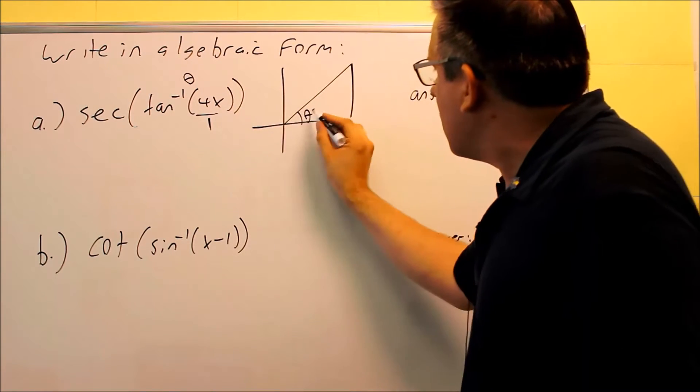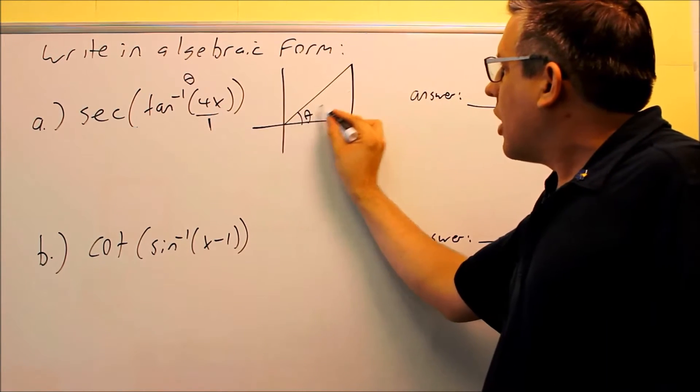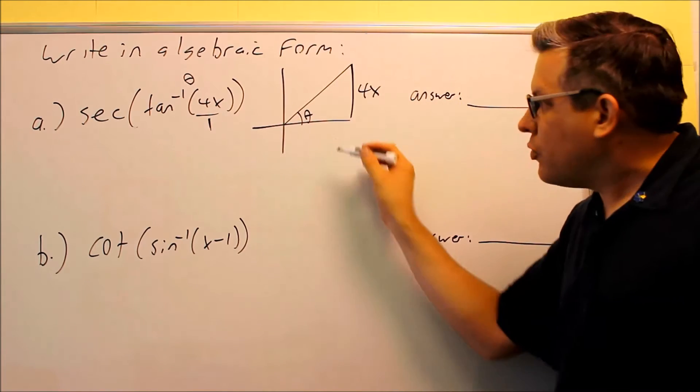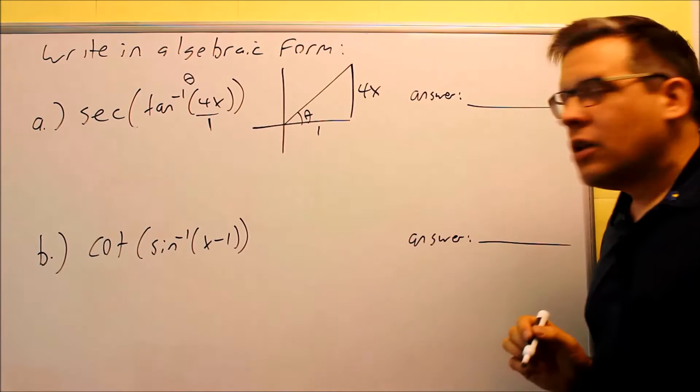4x over 1, that's opposite. So theta is here across the triangle, that's your opposite side, this is 4x. The longest side is hypotenuse, which means that your adjacent side must be this one here.